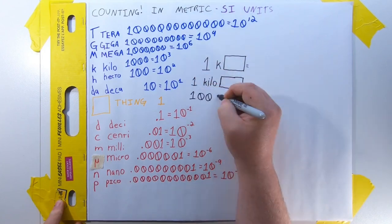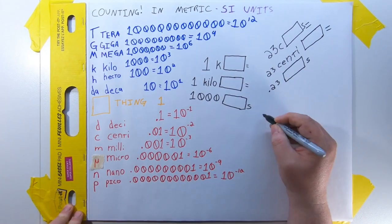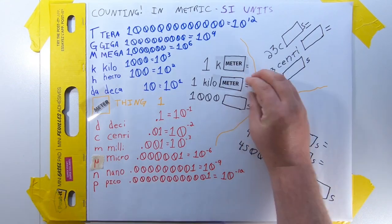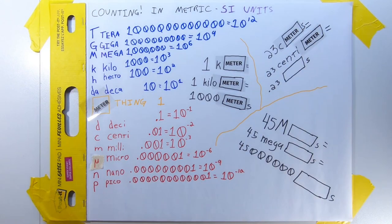Notice I'm being real coy with what we're measuring here. That's because it can really count anything. One kilometer is 1,000 meters. Twenty-three centimeters is 0.23 meters. Forty-five megameters is 45 million meters.